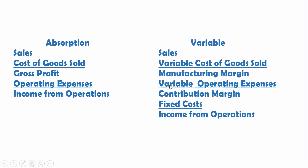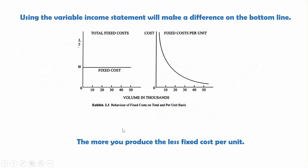Using the variable income statement will make a difference on the bottom line of your income statement. If you remember, our fixed cost per unit — the more we produce, the less it costs per unit. So we're going to look at some numbers showing why this affects the bottom line using a variable income statement.